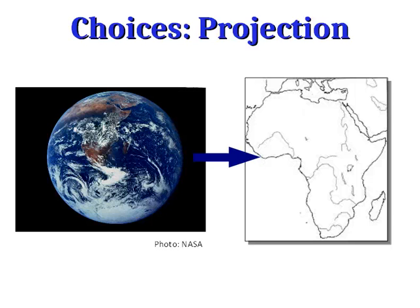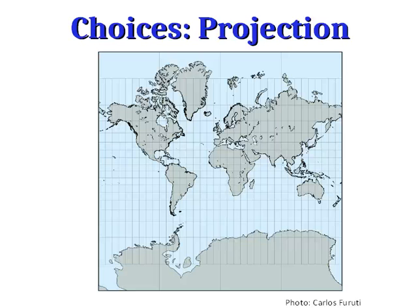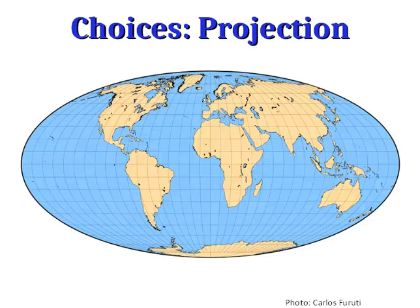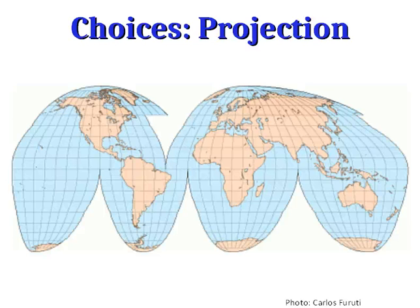Another important choice, especially for small-scale maps showing continents or the entire world, is projection. Projection refers to how we take the round Earth and put it on a flat piece of paper, and there's no one right way to do that. A whole variety of projections have been developed. In a future lesson we'll look at the advantages and disadvantages of each. Just to preview how different they can be: here's the Mercator projection, compared to the Mollweide projection, and the Goode's Interrupted Homolosine. Each has its advantages and disadvantages, and we need to choose the right one for the map we're making.